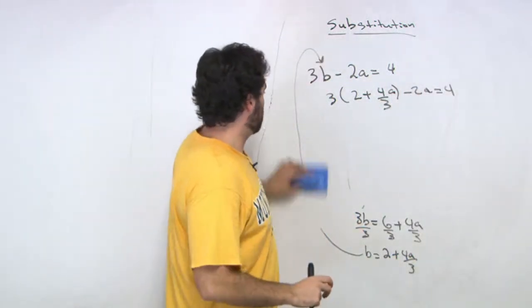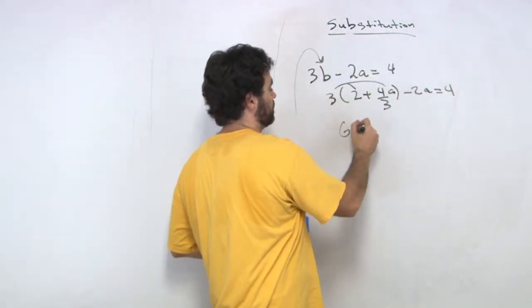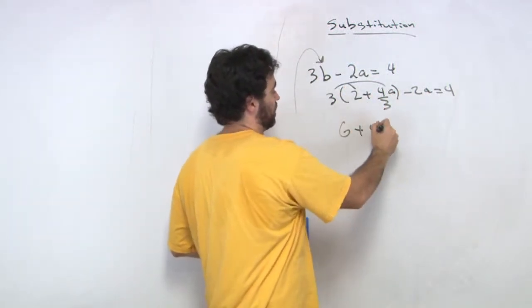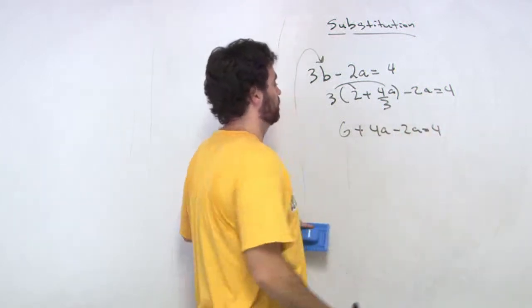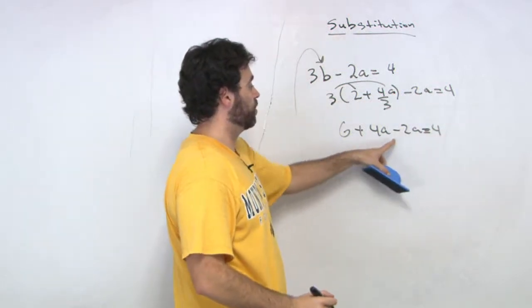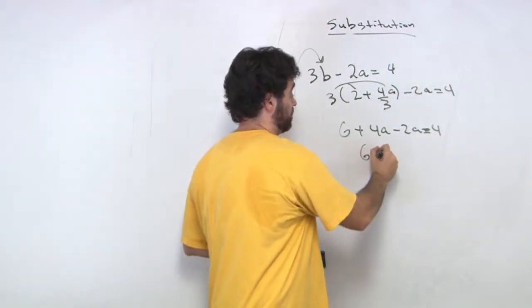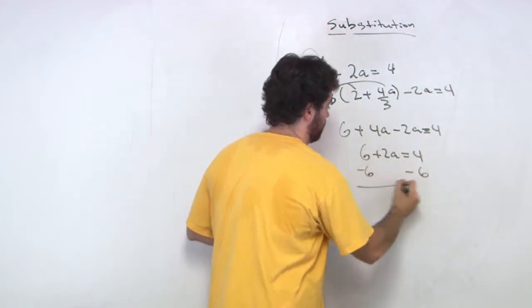Let's see what happens here. We distribute out our 3. We get 6 plus, the 3's cancel. We get 4a minus 2a equals 4. What happens here? We get 4a minus 2a is 2a, so we get 6 plus 2a equals 4, minus the 6.